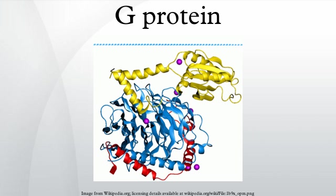The 2000 Nobel Prize in physiology or medicine to Eric Kandel, Arvid Carlsson, and Paul Greengard for research on neurotransmitters such as dopamine, which act via GPCRs. The 2004 Nobel Prize in physiology or medicine to Richard Axel and Linda B. Buck for their work on G-protein coupled olfactory receptors. The 2012 Nobel Prize in chemistry to Brian Kobilka and Robert Lefkowitz for their work on GPCR function.